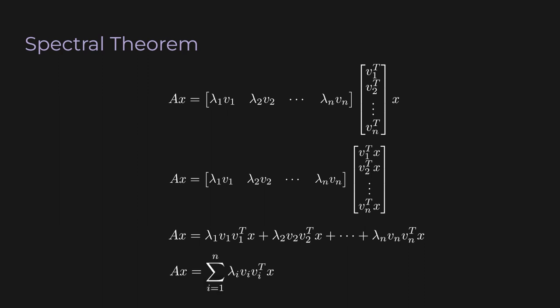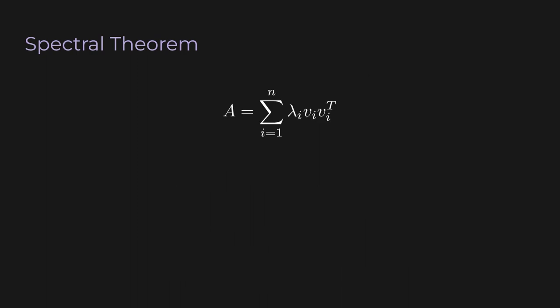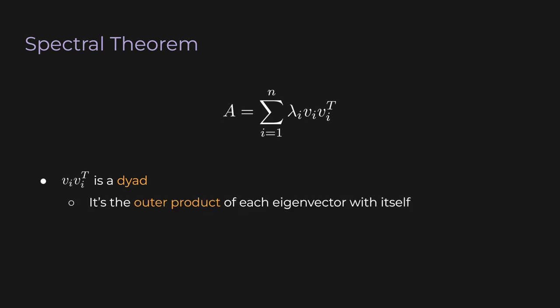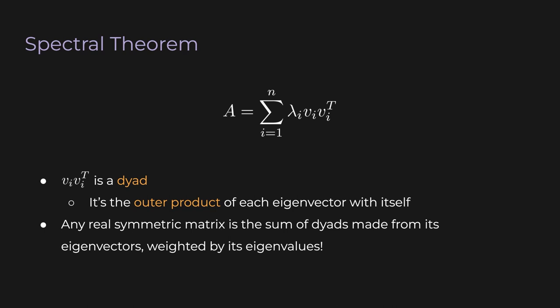We can write it out: we scale lambda1 v1 by the dot product of v1 and x, do the same for all other eigenvectors, and add everything together to get one vector. But v1 times the dot product of v1 and x is just the projection of x onto v1. So we're projecting x onto each eigenvector and taking the linear combination of those projections weighted by the eigenvalues. Writing this in summation notation, we can factor out x and remove it from both sides. Now we're left with a beautiful equation: A equals the sum over i of lambda_i times v_i v_i transpose. The quantity v_i v_i transpose is not a dot product — it's an n×n square matrix called a dyad, also known as an outer product, since it produces something bigger rather than a scalar inner product.